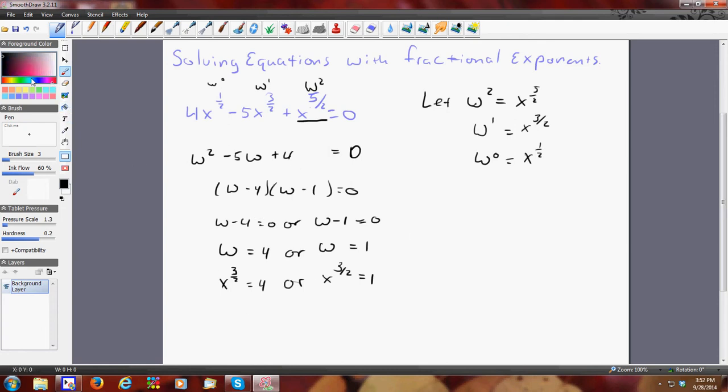So now, by raising them both to the 2 3rds power, I'm able to get x by itself. Because 3 times 2 is 6, and 2 times 3 is 6. So I get 6 over 6, which is x to the 1st. Here I get 4 to the 2 3rds, which is really the cubed root of 4 squared. So x equals the cubed root of 16.